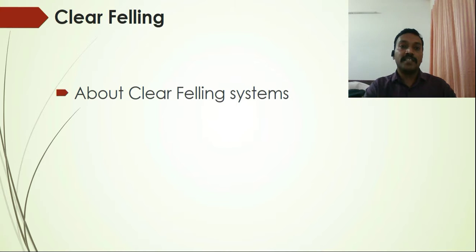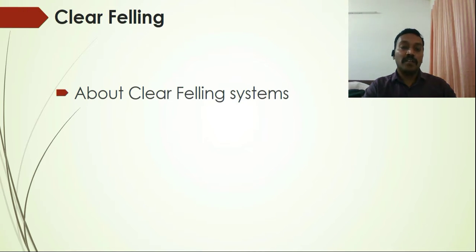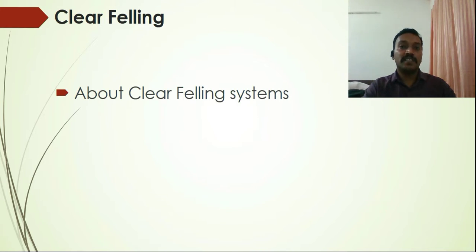In the clear felling system, all the trees growing in a given forest area are felled in one go, and no trees are left except under special circumstances. The felling is highly concentrated, and this system is applicable for very short rotation species. We will study in detail about this system, its significance, and its demerits in later sessions.